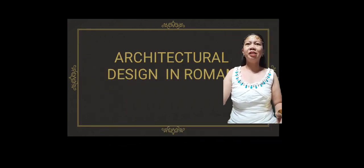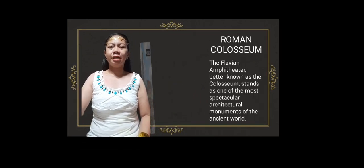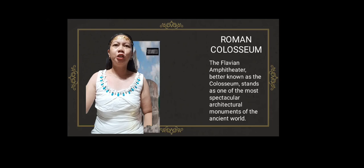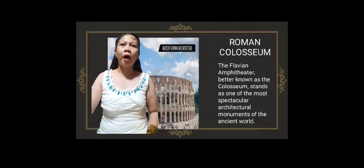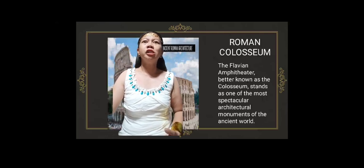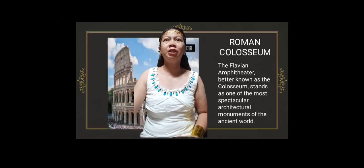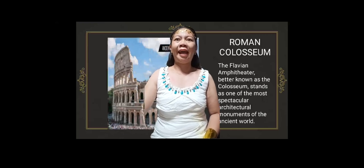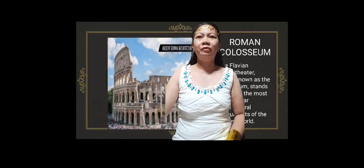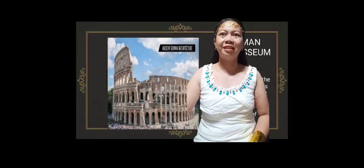Here are samples of architectural design in Roman art. First, the Roman Colosseum. The Roman Colosseum, also known as the Flavian Amphitheater, stands as one of the most spectacular architectural monuments of the ancient world. The arches of the Colosseum are made out of cement, a remarkably strong building material the Romans made with what they had at hand: volcanic ash and volcanic rock. Modern scientists believe that the use of this ash is the reason that structures like the Colosseum still stand today.